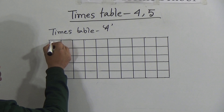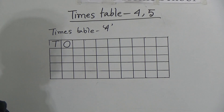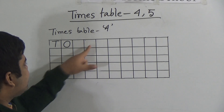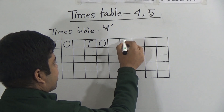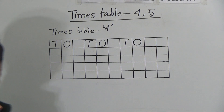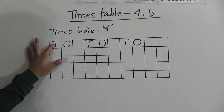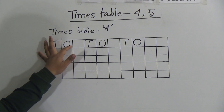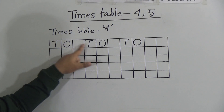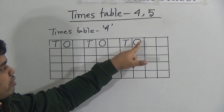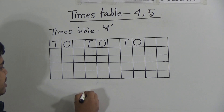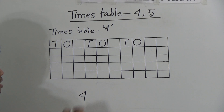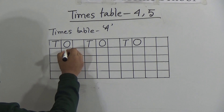At first we write T O. So here you write T O. Then you leave one box empty. After that again we write T O. Then again we leave one box empty. Then we again write T O. I hope you have understood how to write times table. O means ones space and T means tens space. Now my dear students, we need to write times table 4. The number 4 is in ones space, so we write this 4 in ones space.